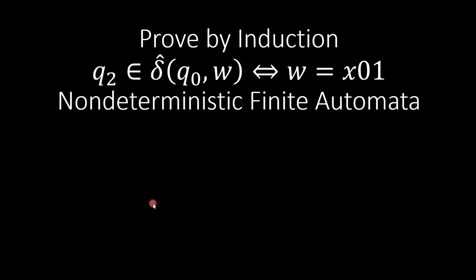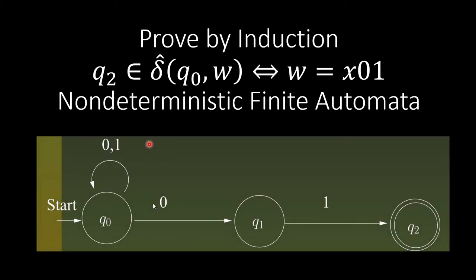Hello, my name is Dan Lowe. In this video, I'm going to show you how to prove by mathematical induction for this NFA, where we have q0, q1, q2, three states, and only if q2 is in δ̂(q0, w), then w must be x01, ended by 01.